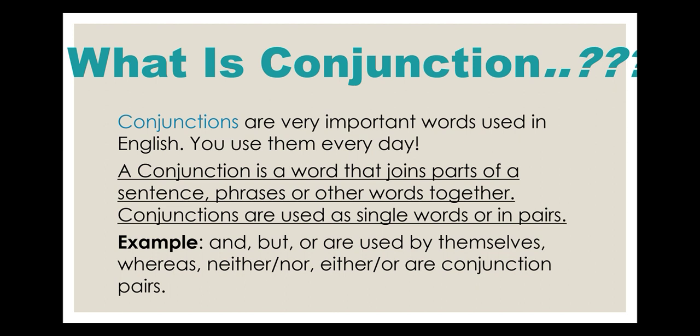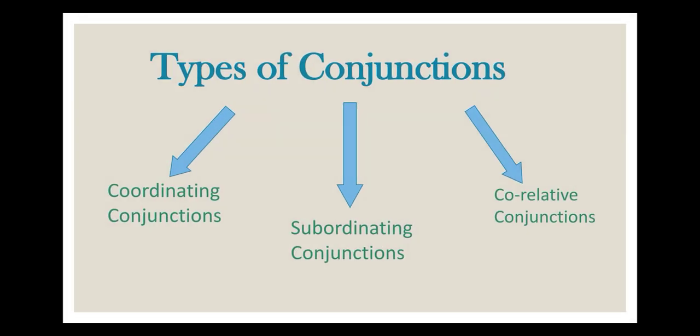First of all, let's understand what is a conjunction. A conjunction is a word that joins parts of a sentence, phrases, or other words together. Conjunctions are used as single words or in pairs. Examples: 'and', 'but', 'or' are used by themselves, whereas 'neither...nor' and 'either...or' are conjunction pairs.